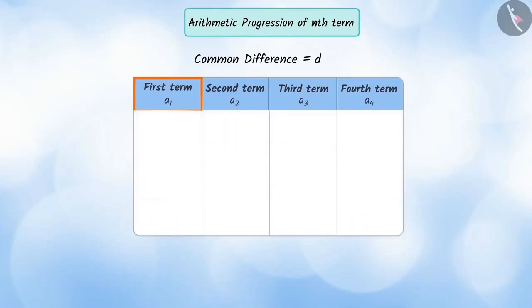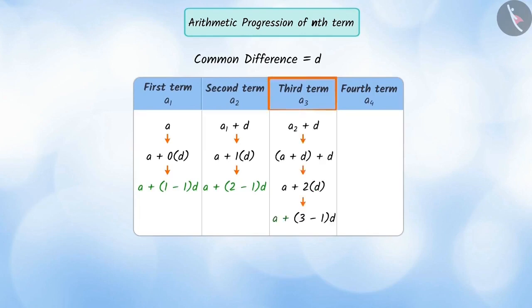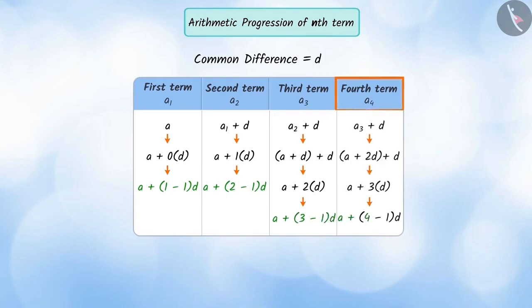Here, the first term a1 can be written as a plus (1 minus 1) multiplied by D. The second term a2 as a plus (2 minus 1) multiplied by D. The third term a3 as a plus (3 minus 1) multiplied by D. And the fourth term a4 as a plus (4 minus 1) multiplied by D.